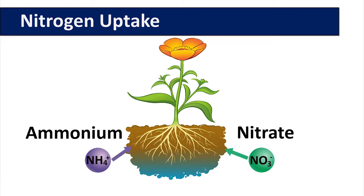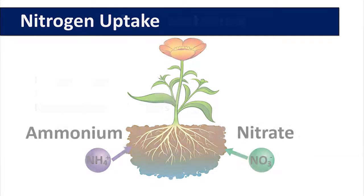Photosynthesis requires sunlight, carbon dioxide, and water to produce glucose. This simple sugar is a carbohydrate that combines with other sugars to form the plant structure and stores energy for future use.